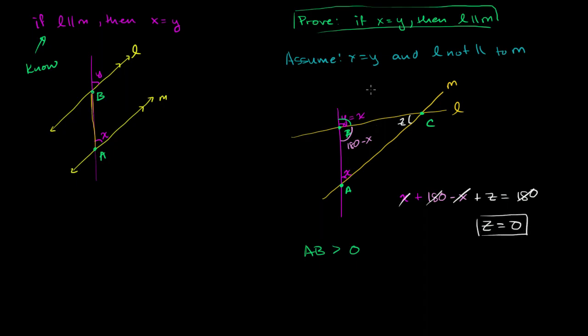So if we assume that X is equal to Y, but L is not parallel to M, we get this weird situation where we form this triangle. And the angle at the intersection of those two lines that are definitely not parallel, all of a sudden becomes zero degrees. But that's completely nonsensical. If this was zero degrees, that means that this triangle wouldn't open up at all, which means that the length of AB would have to be zero.